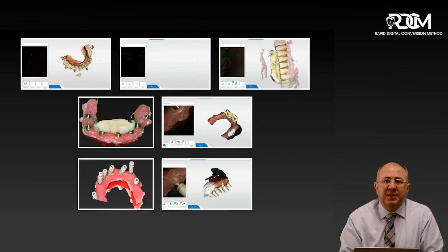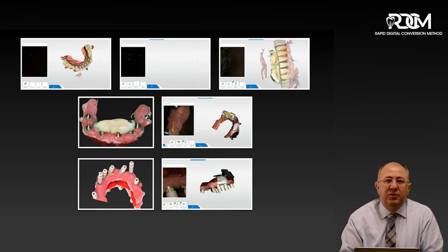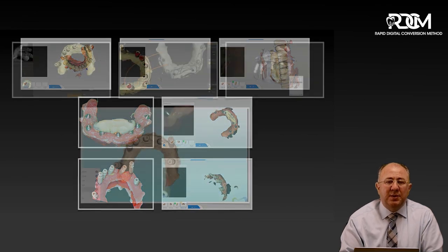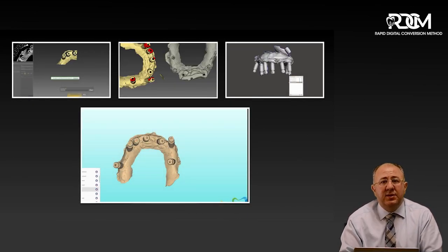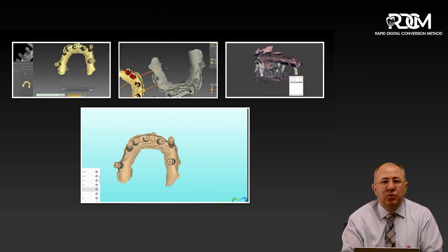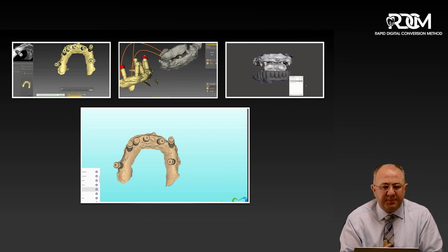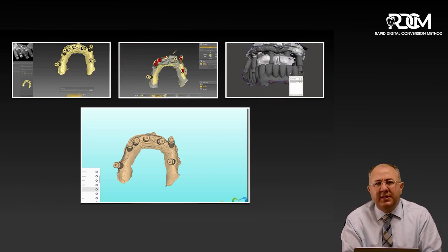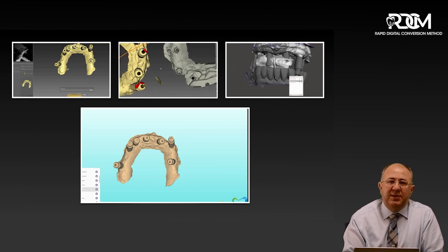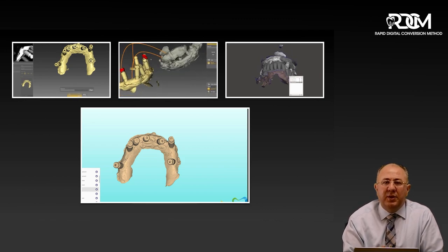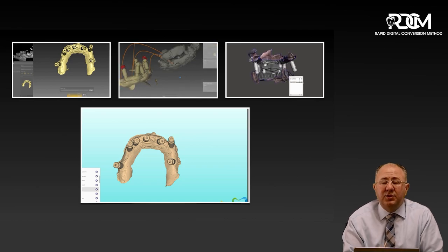I spoke about different kinds of scan bodies that can be used on a model scan — there is really no preference on which scan body you use. I also spoke about the desktop scanner still being the gold standard: getting the same model and collecting one additional scan using a desktop scanner, then merging that desktop scan to mount it perfectly in occlusion. And importantly, if you look at my method, there is only one merge done during the whole process — only one merge — which simplifies the process and reduces error.